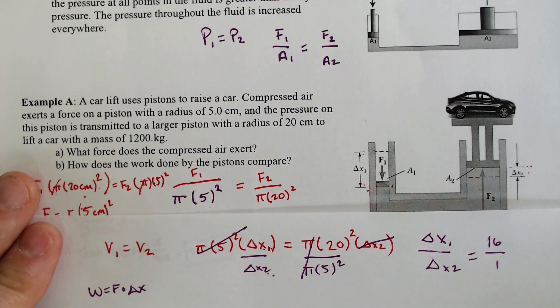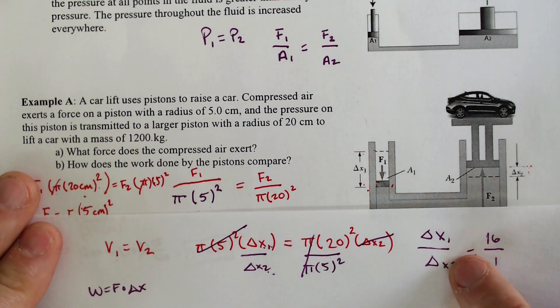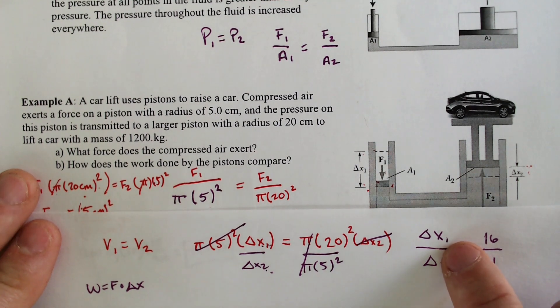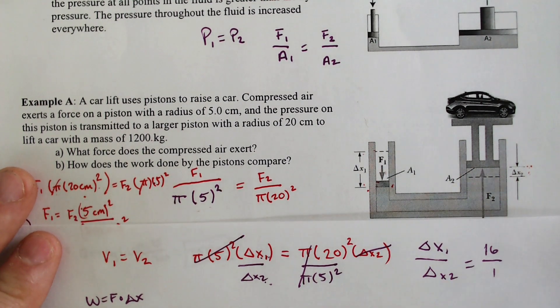And if 16 over 1 is equal to that, we also have to figure out the forces of each. What's the force of delta x1? Delta x1, we had 750.